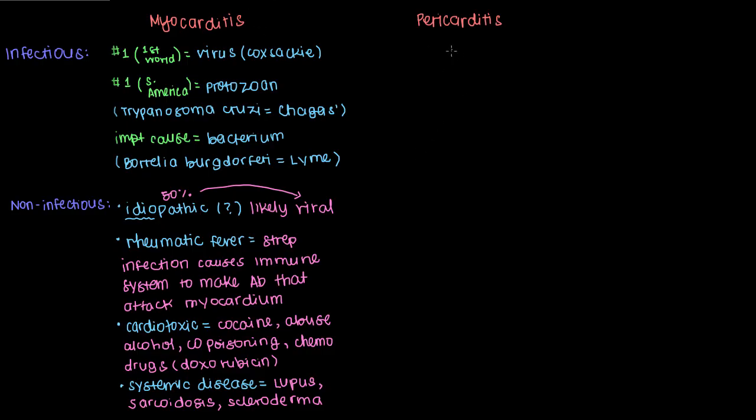So let's shift over to pericarditis now. Let's start with infectious causes there. It used to be that the Coxsackie virus was the most common cause of pericarditis, but recent studies have suggested the number one cause of pericarditis for the first world, in developed countries,